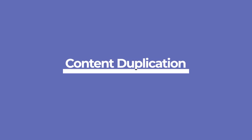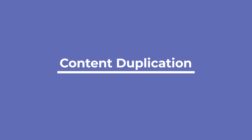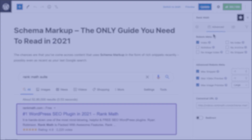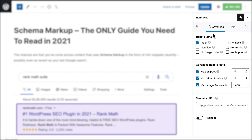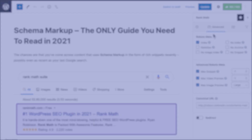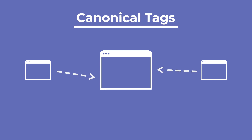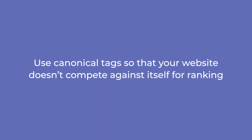Another factor is content duplication. If two or more pages on your website are about the same topic and you can't combine them, you need to add a canonical URL for these duplicate pages, pointing to the one that you want to index. In case you've never heard of canonical tags, they tell search engines which URL in the website should be indexed for the content on that page. They can point to another URL or the page itself. Use them so that your website doesn't compete against itself for ranking.